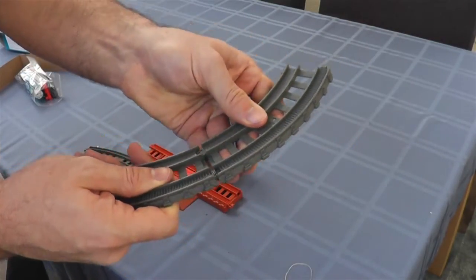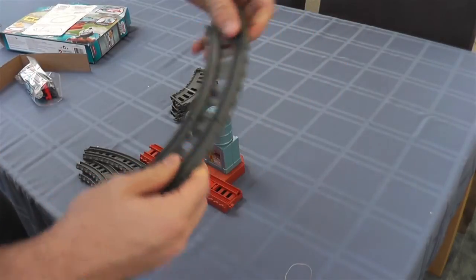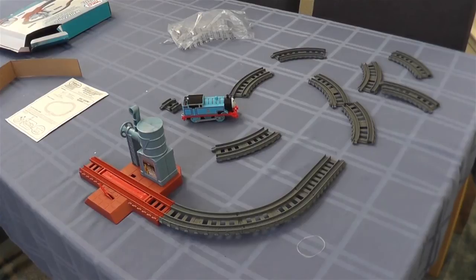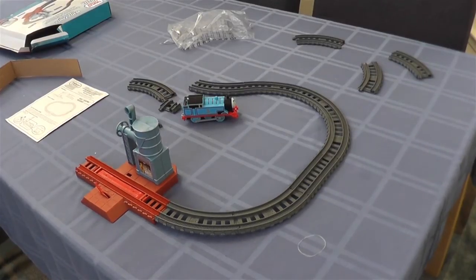I'll show you how to click a couple pieces of track together if you haven't done this before. It's pretty easy. When the tracks are new, it's a little harder, but it's not too bad. Here we go. We're going to put this together.